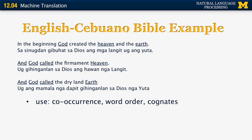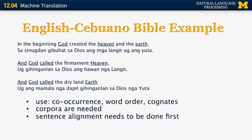Some of the information you can use includes co-occurrences in sentences, word order — especially across languages that are relatively similar — and cognates, which are more useful when languages are related. You need corpora aligned at the sentence level. If they are not aligned, the first step is to align them automatically. If they are not exactly the same text but only what is known as comparable corpora, sentence alignment may be trickier and noisier, but it is still possible to build translation systems based on comparable corpora.